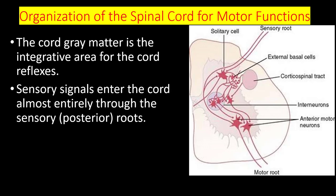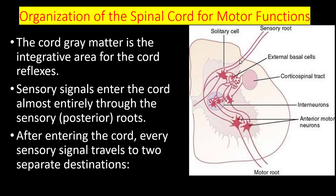Reflex sensory signals enter the cord almost entirely through the sensory posterior route. After entering the cord, every sensory signal travels to two separate destinations. The first destination: one branch of the sensory nerve terminates almost immediately in the gray matter of the cord and elicits local segmental cord reflexes and other local effects.